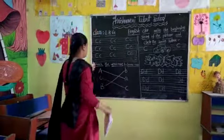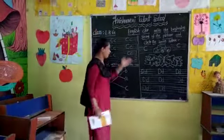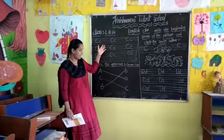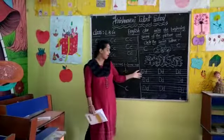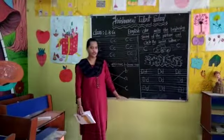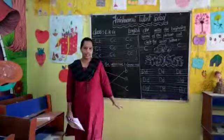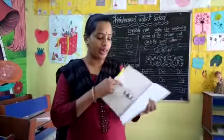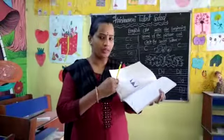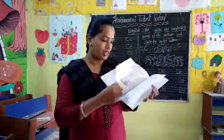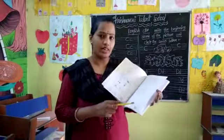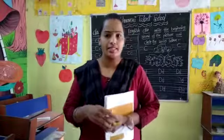Today we learned the letters C and D — capital C and small c, and capital D and small d. Got it? You have to do homework — learn and practice, children. You have to trace the letters and color the pictures and do homework, children. See you in next class, children.